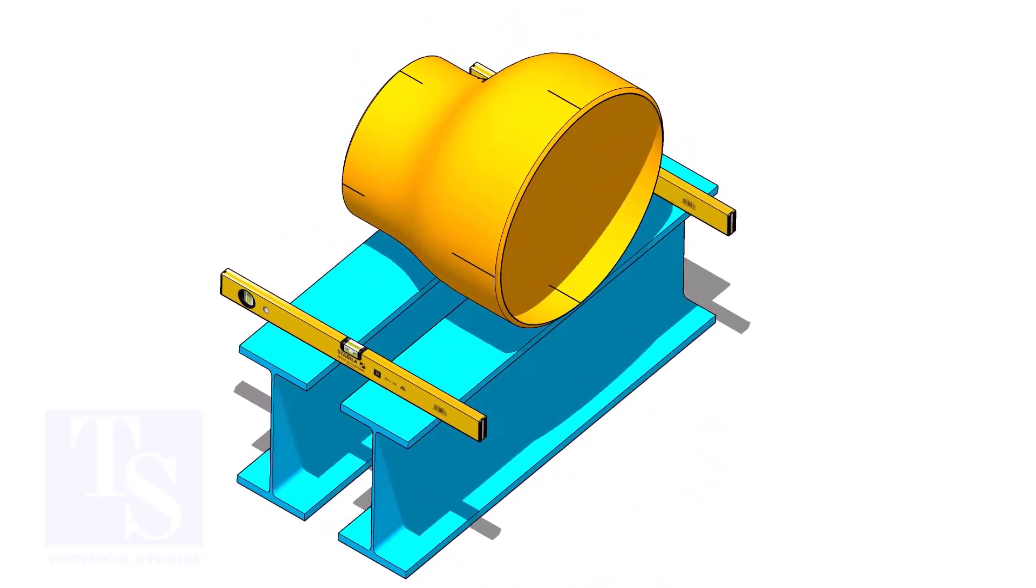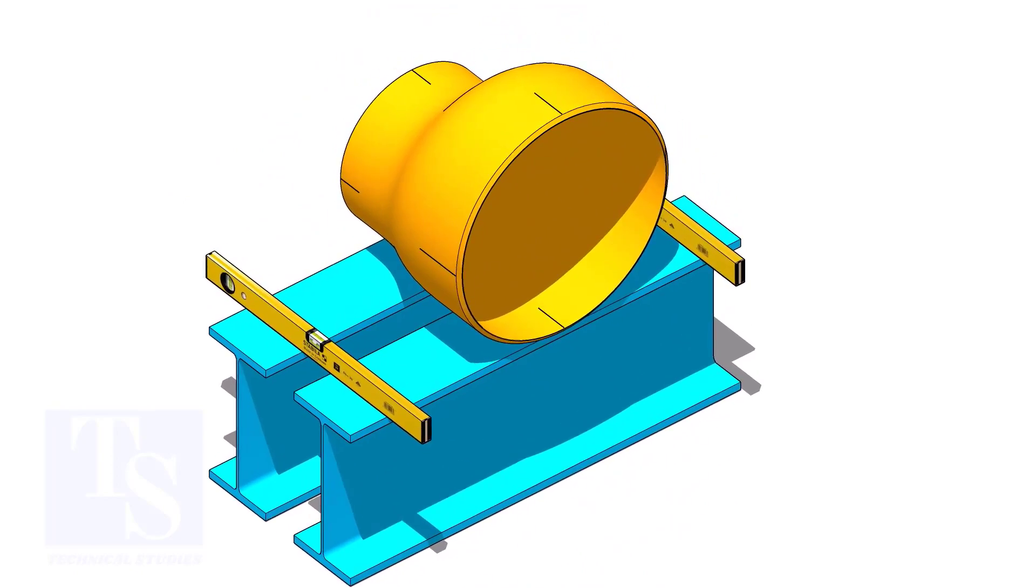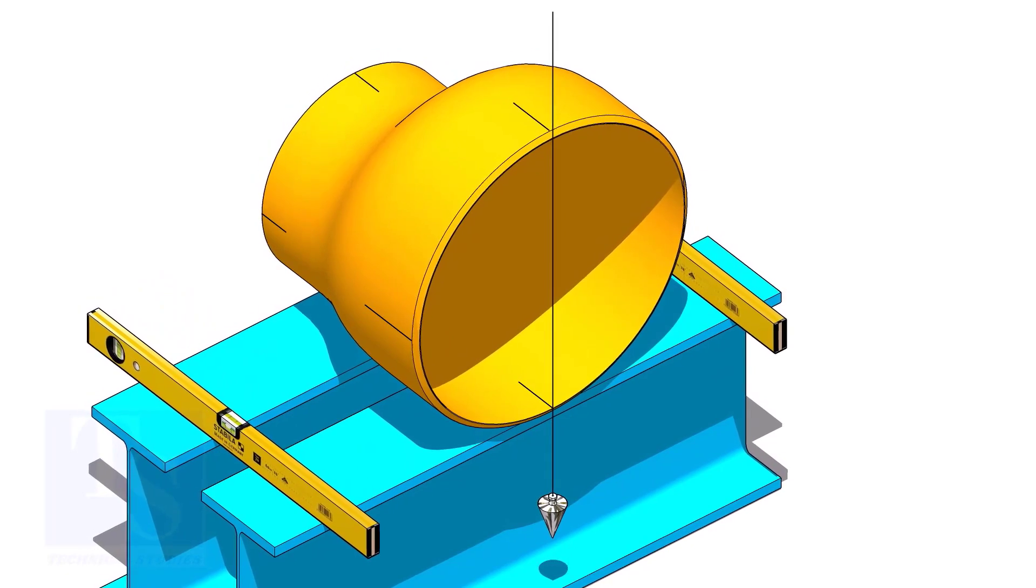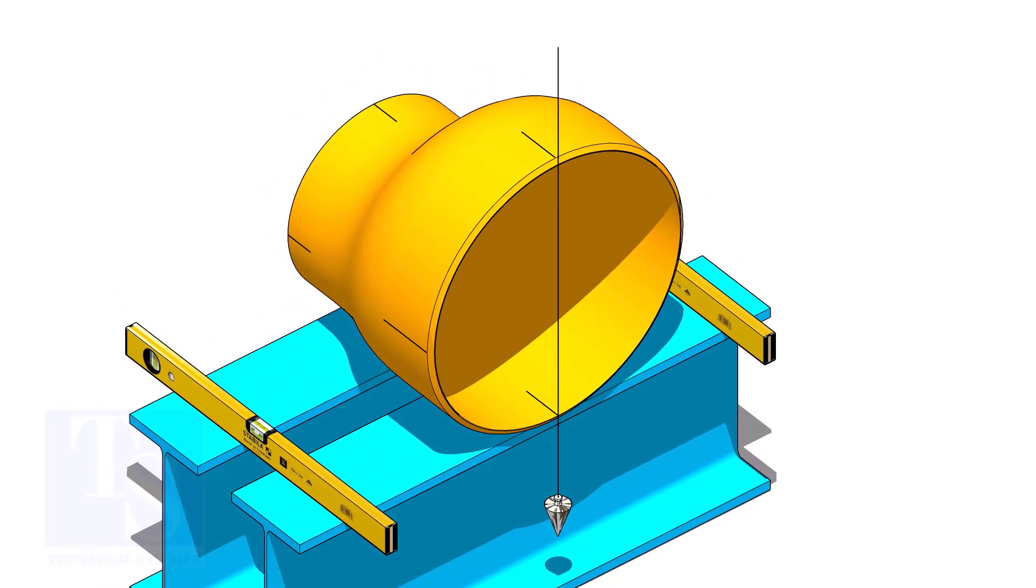Put the reducer on supports. Plumb the reducer and put packing on both sides.